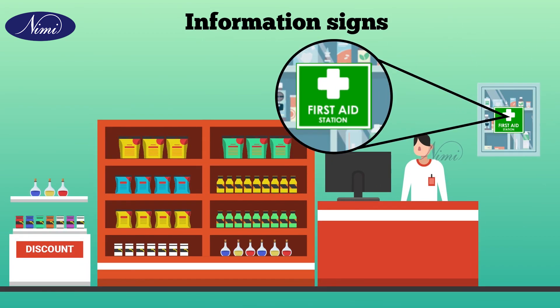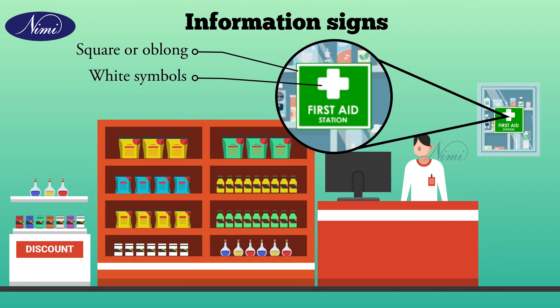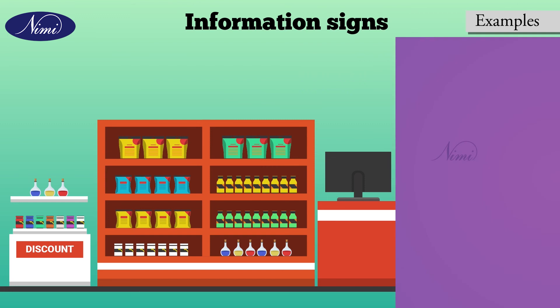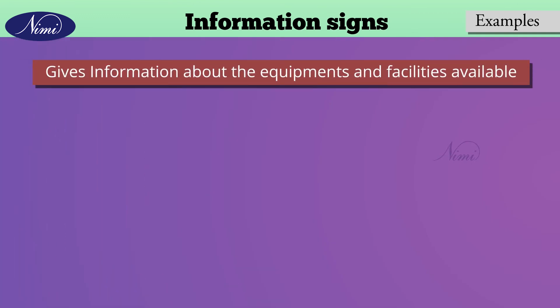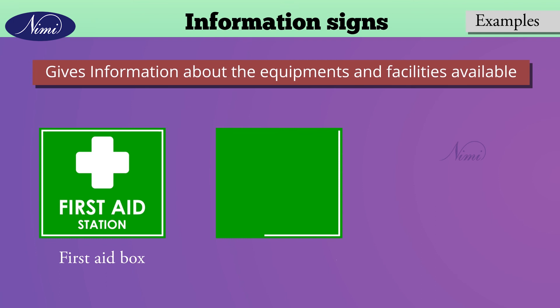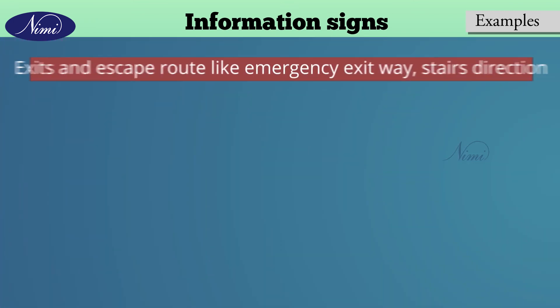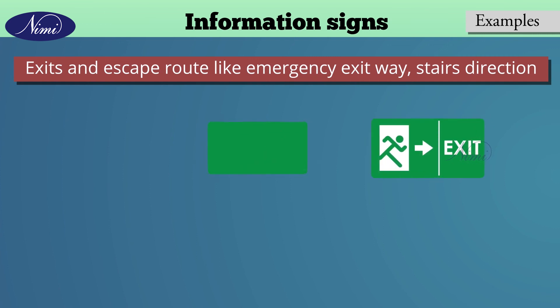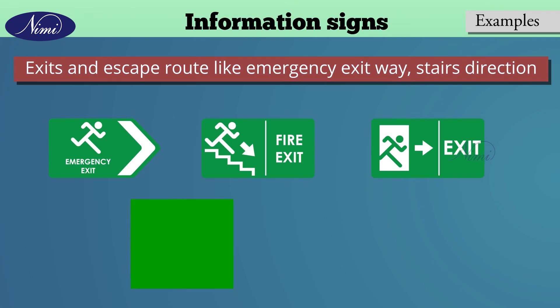Information signs are square or oblong in shape, with white symbols on a green background. They indicate or give information on safety provisions. Examples include information about equipment and facilities such as first aid boxes, emergency switches, or alarm switches. They also give information about exits and escape routes such as emergency exit ways and staircase directions.